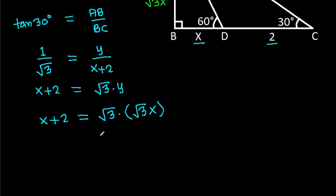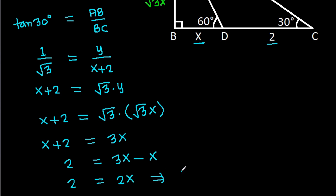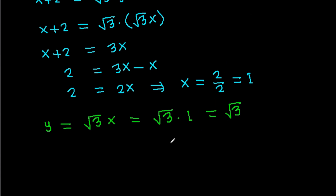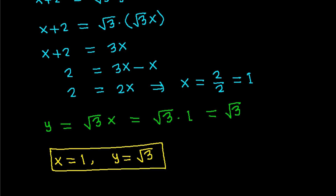Substituting y = √3·x into x + 2 = √3·y, we get x + 2 = √3 times √3·x, which is 3x. So 2 = 3x − x = 2x, giving x = 1. And y = √3 times 1, so y = √3. We get x = 1 and y = √3.